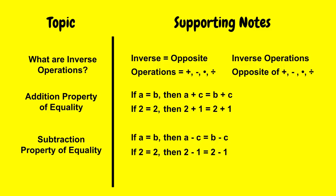So the addition property of equality and subtraction property of equality are things we can use to solve an equation without changing the truth value of it.